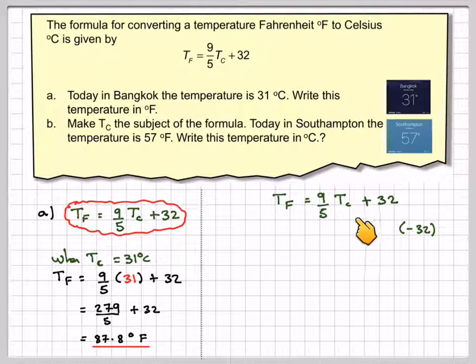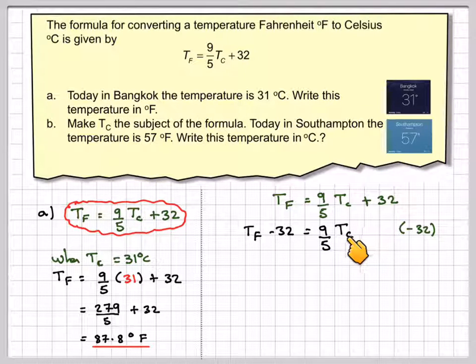You need to do that from both sides. If you take away 32 from this side, you're going to get 9 fifths of Tc. On this side, you're going to get Tf minus 32. Here we've got divide by 5. The opposite of dividing by 5 is to multiply by 5. You do it to both sides. When you do it to this side, 5 divided by 5 will cancel, so you get 9 times Tc.